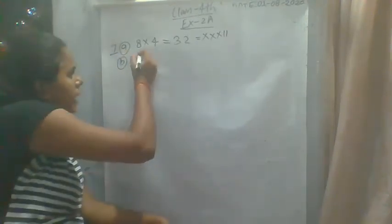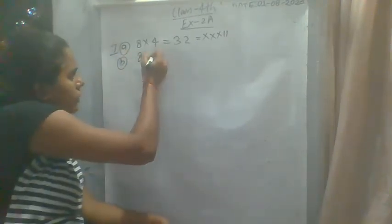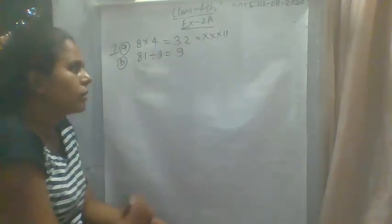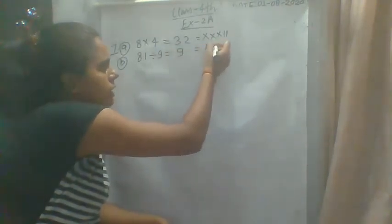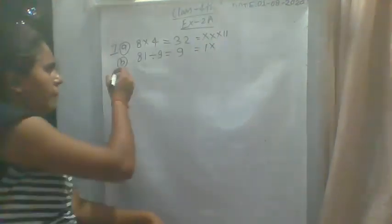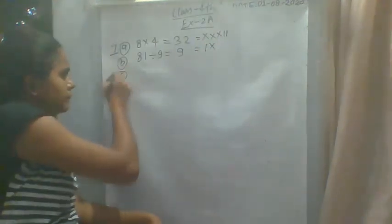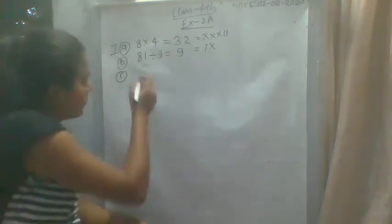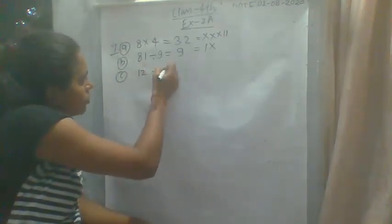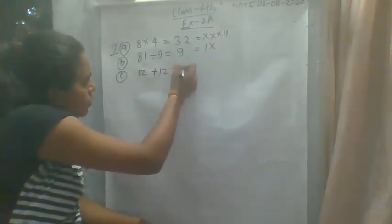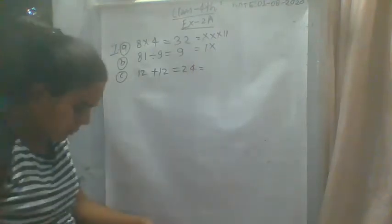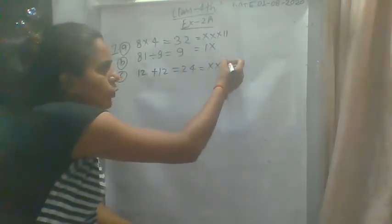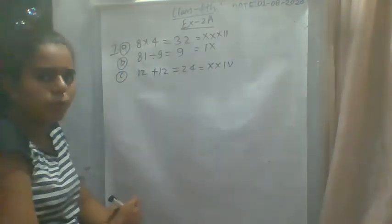81 divided by 9 gives 9, written as IX. Then C: 12 plus 12 equals 24. So we have 24, written as XXIV.